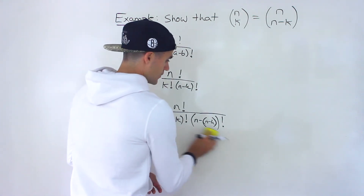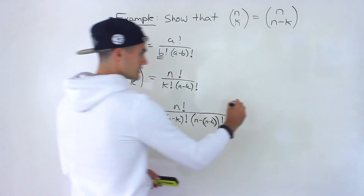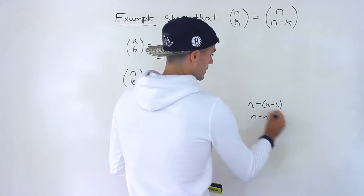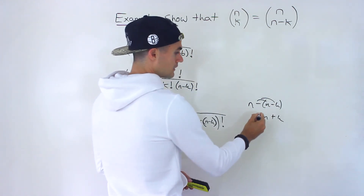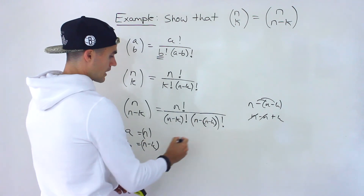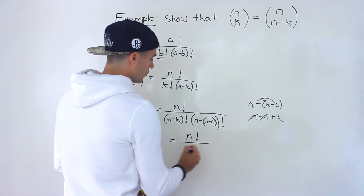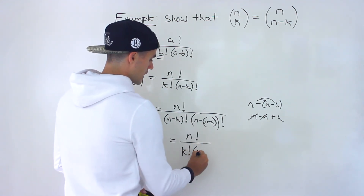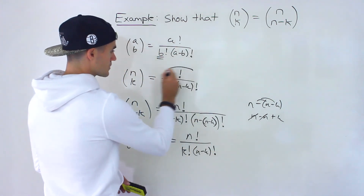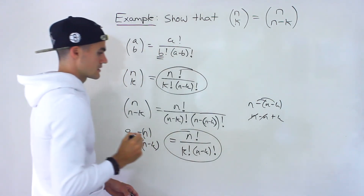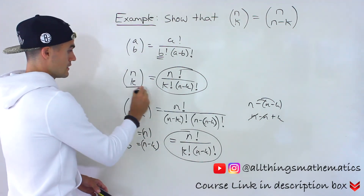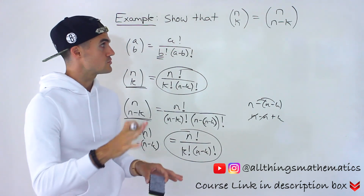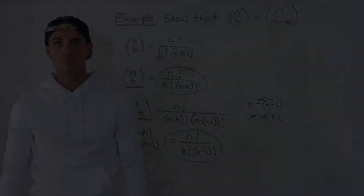Notice we can simplify this because n minus (n minus k) is n minus n plus k, after we distribute the negative inside the bracket. The n minus n cancels out, so we're just left with k. So this ends up being n factorial over k factorial times n minus k factorial. This and this are the exact same thing, which means we've just shown that n choose k is equal to n choose n minus k.